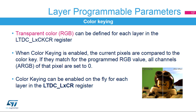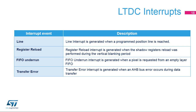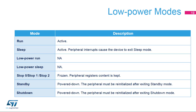Color keying is enabled through the LTDC LXCKCR register. A line interrupt is generated when a programmed line position is reached. A register reload interrupt is generated when the shadow registers are reloaded during the vertical blanking period. A FIFO underrun interrupt is generated when a pixel is requested from an empty layer FIFO. A transfer error interrupt is generated when an AHB bus error occurs during data transfer.